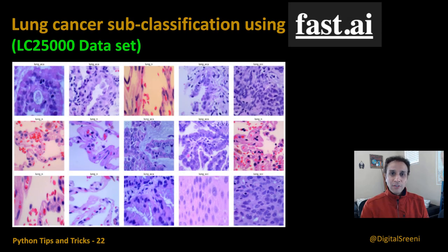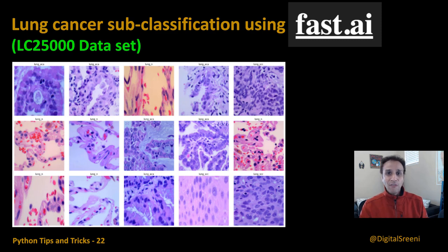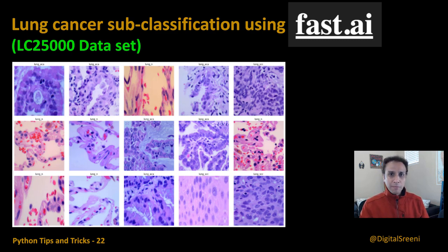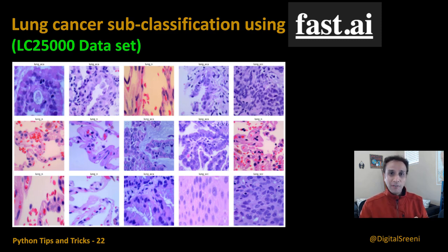Hey guys, welcome to the Digital Screening channel on YouTube. In this video I'm going to talk about how you can use the Fast AI API to perform lung cancer subclassification. This is basically a classification problem. I chose lung cancer subclassification because many of you asked me to cover it, and I normally do Keras-based API using Keras on top of TensorFlow.